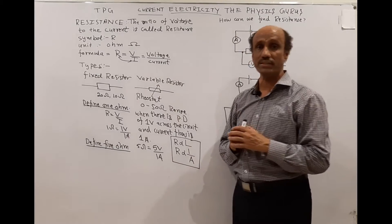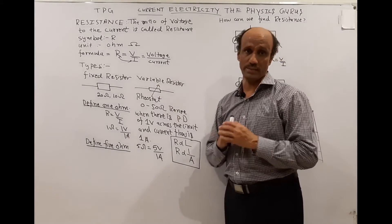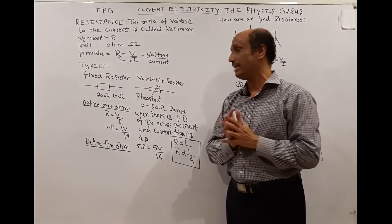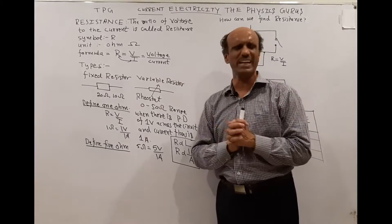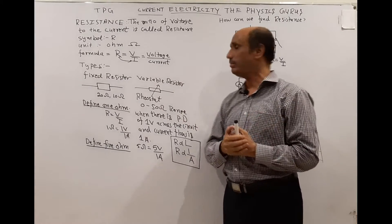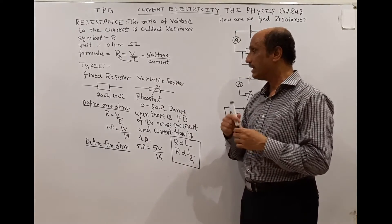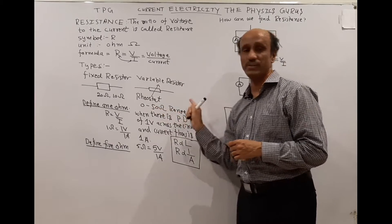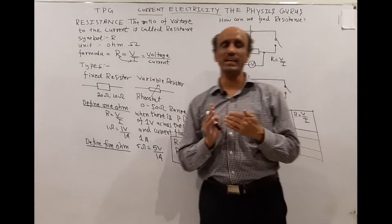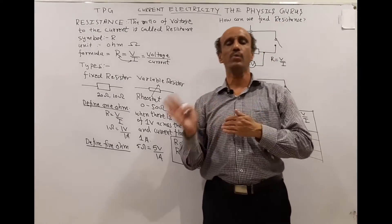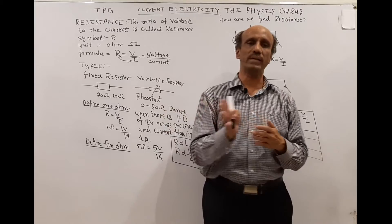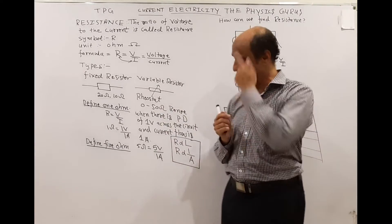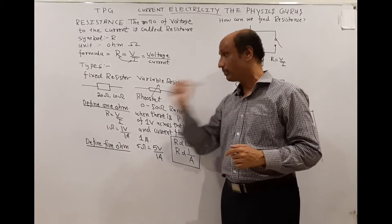The symbol for fixed resistor and variable resistor are shown. The other name for variable resistor is rheostat — remember this name. The value of a fixed resistance can range from 10 ohms up to megaohms, while a variable resistor has a range, for example 0 to 50 ohms, giving a variety of different resistance values.